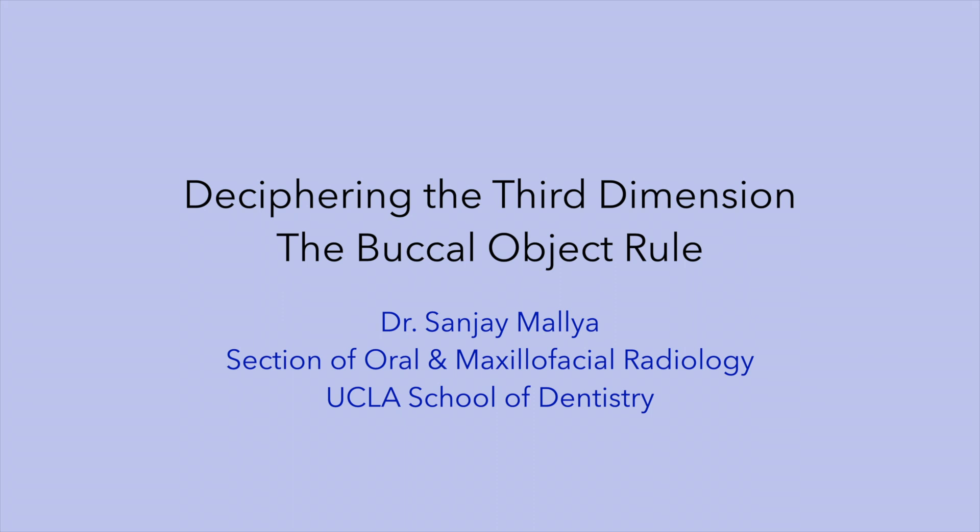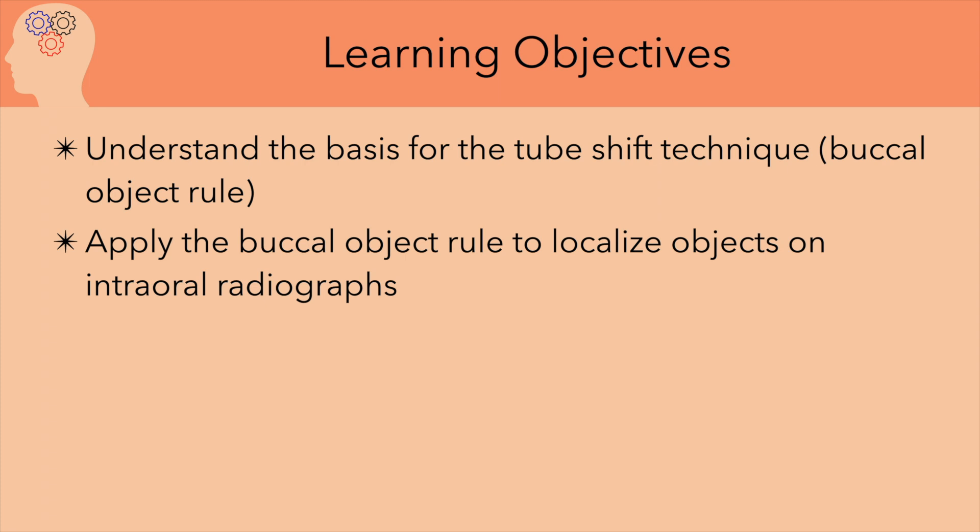Typically, the first images that we make of our patients are intraoral and panoramic radiographs. An inherent limitation of these radiographs is their two-dimensional nature. In this video, I'll describe approaches to decipher the buccolingual dimension with a focus on the buccal object rule. At the end of the presentation, you should understand the concept of the buccal object rule and be able to apply it to localize objects in the dento-alveolar region.